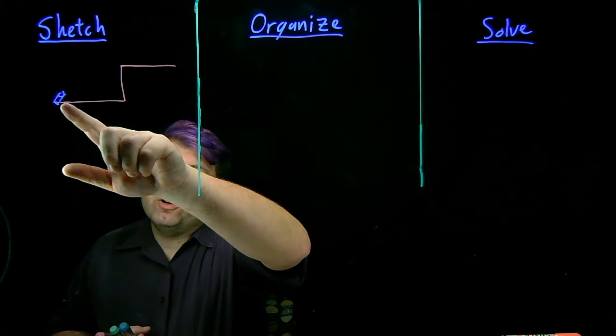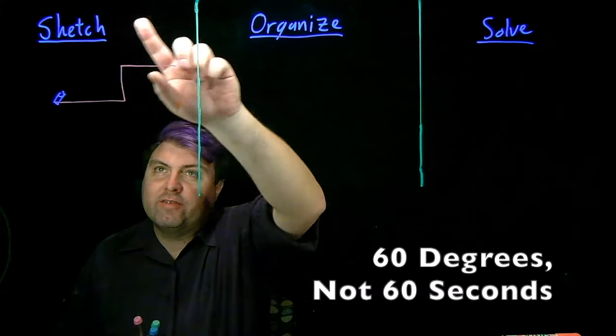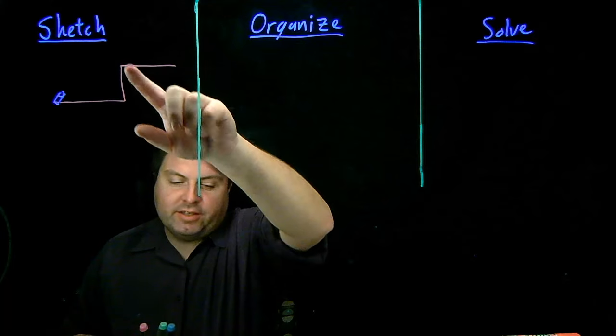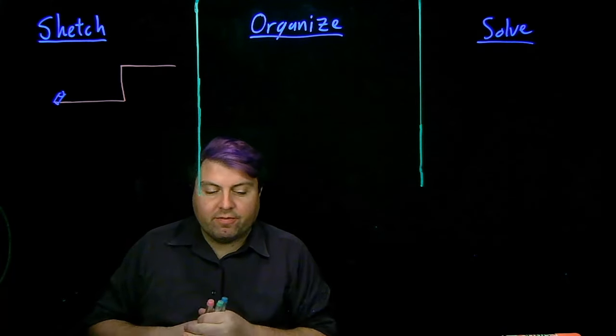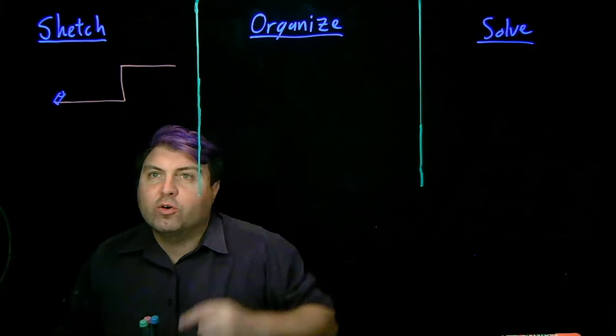In this problem we have a mortar that fires a shell 36 meters per second at an angle of 60 degrees. We then find out after five seconds it hits the edge of this cliff. We want to know how high the cliff is and the final velocity of the mortar shell.